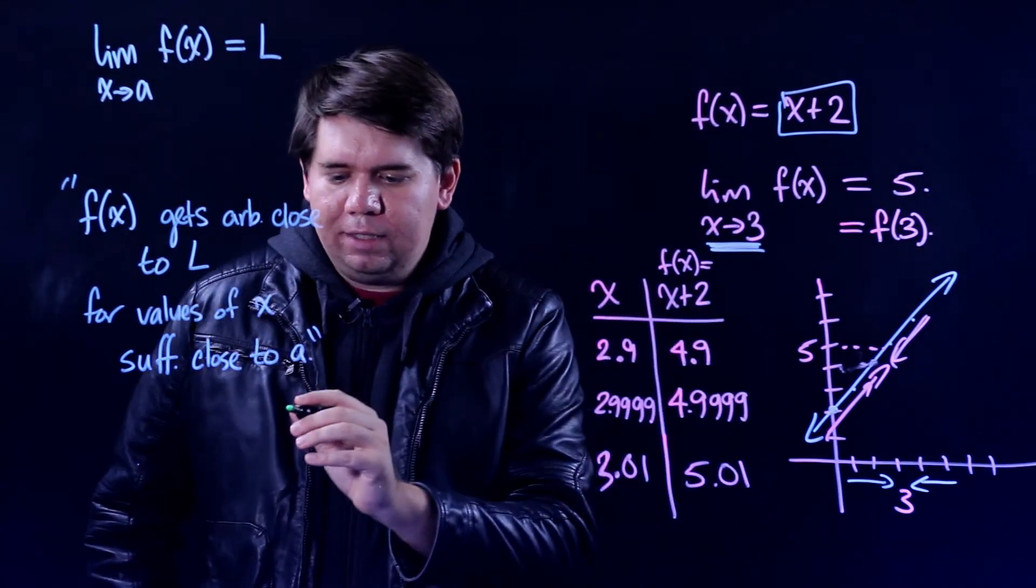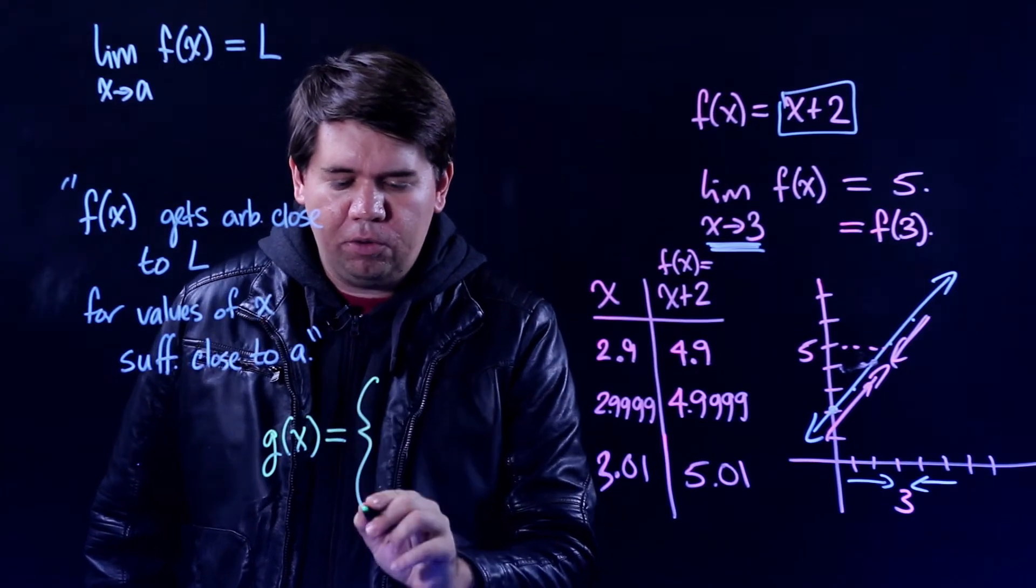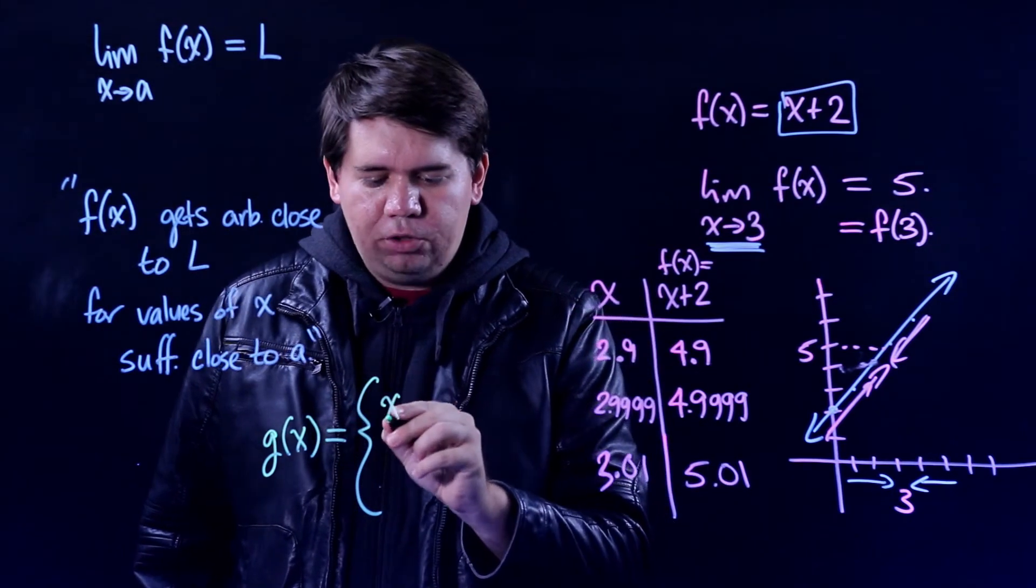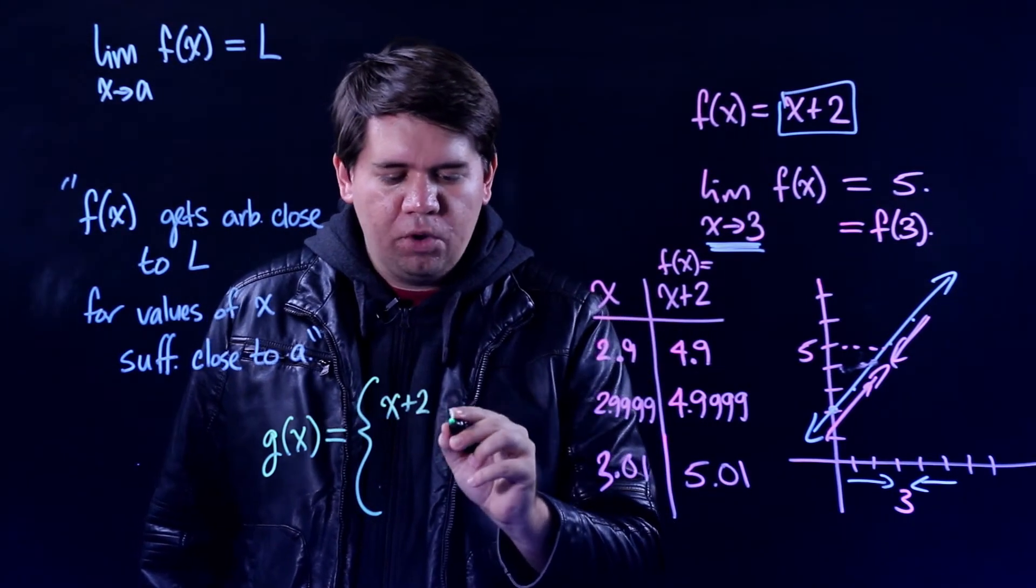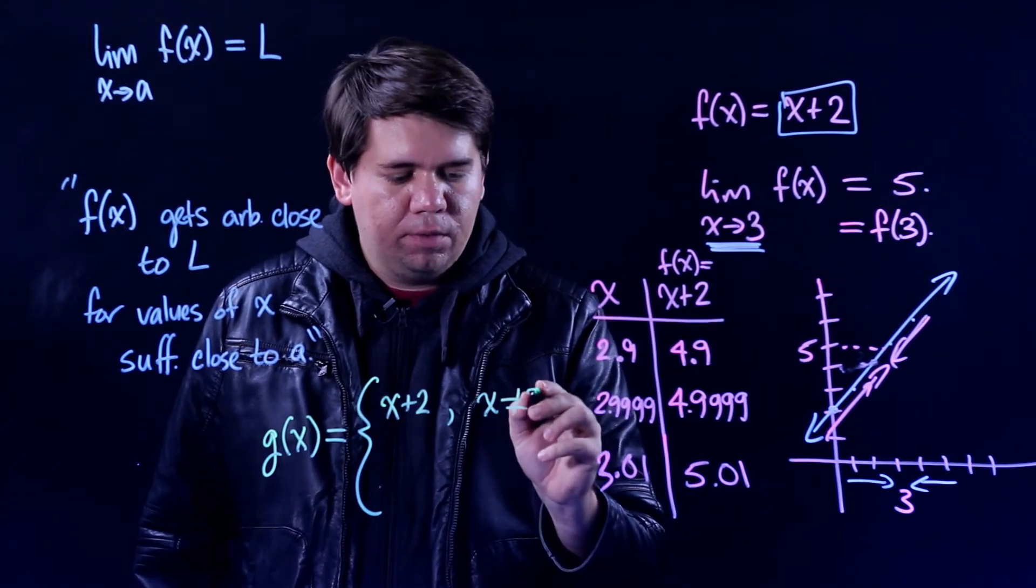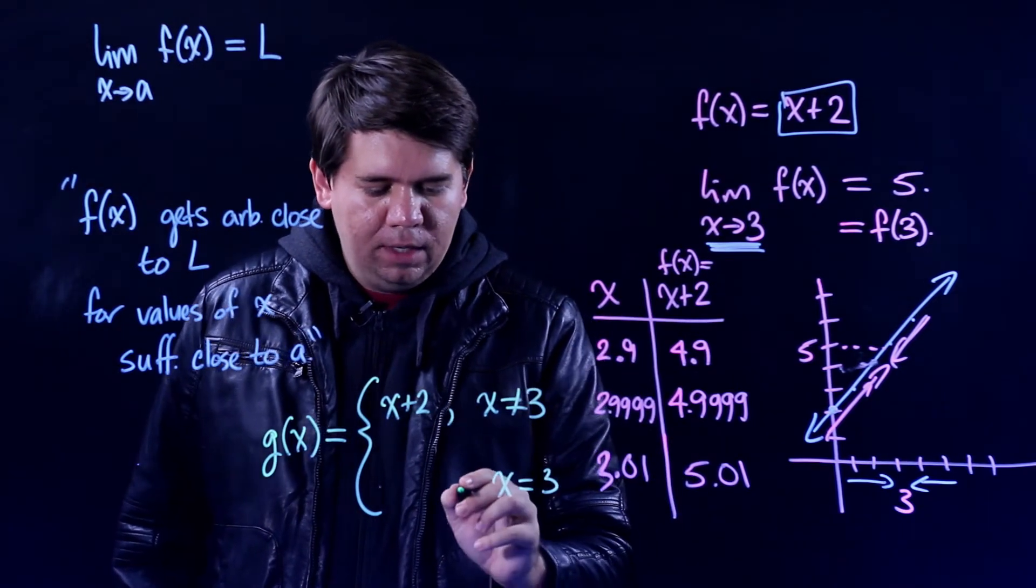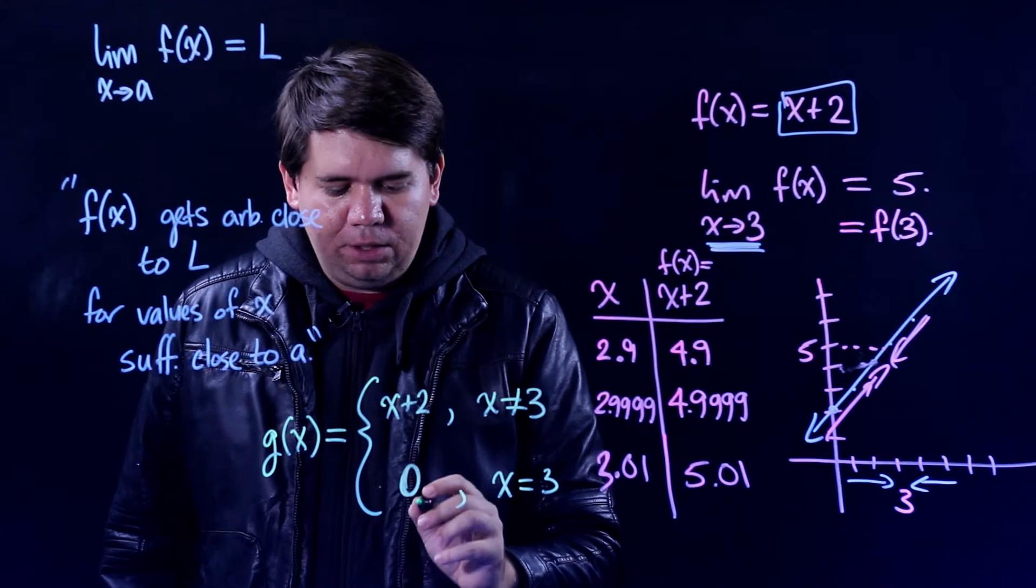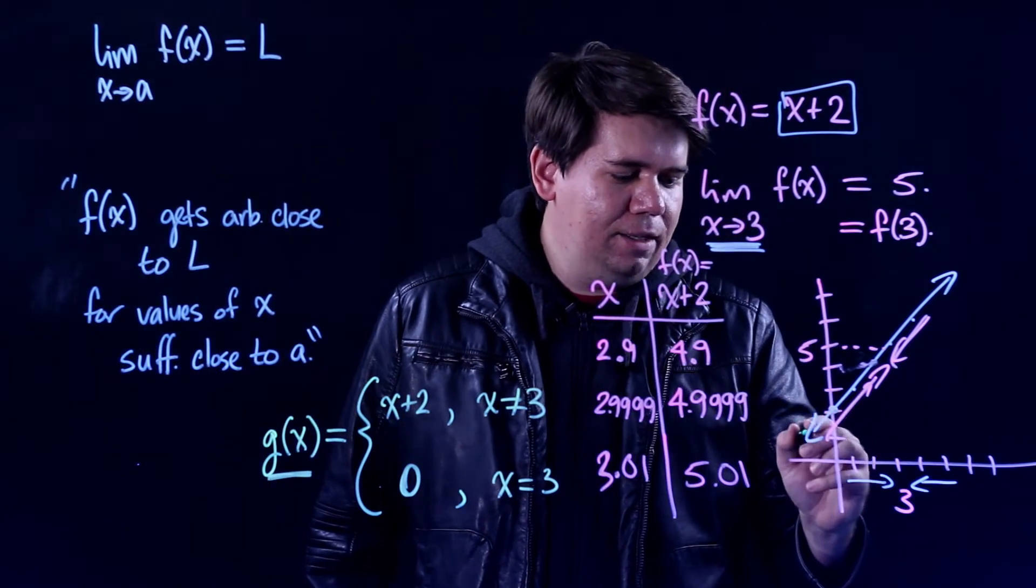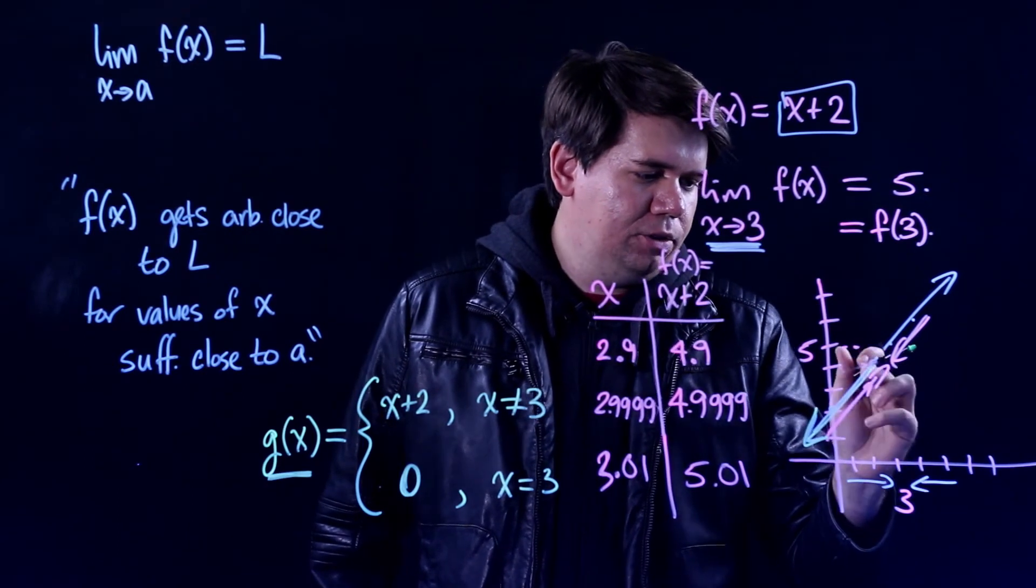Let's consider a slightly different function, we'll call it g of x, and let's define this function as a piecewise function. g of x would be the same as f of x—it'll just be x plus 2 whenever my x value that I'm plugging in is not equal to 3. But when my x value is equal to 3, let's have it instead spit out 0. So what does g of x look like? g of x looks identical to f of x except at 3 there's going to be a hole.